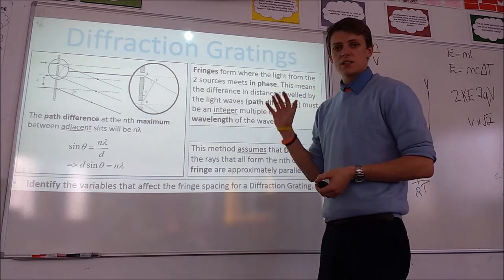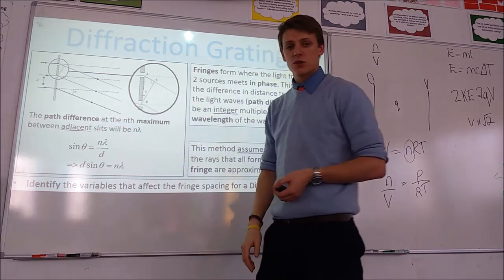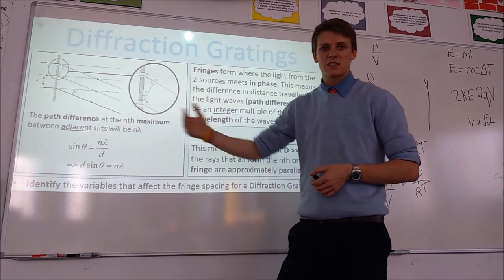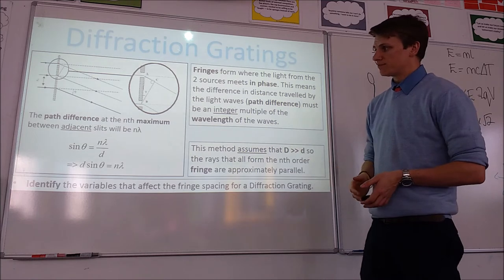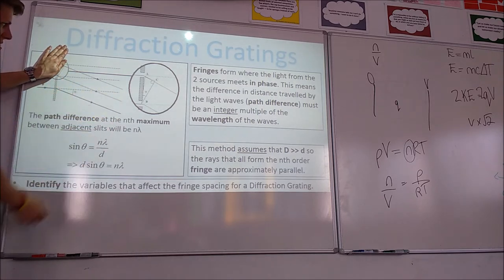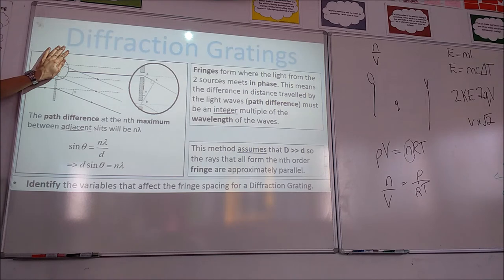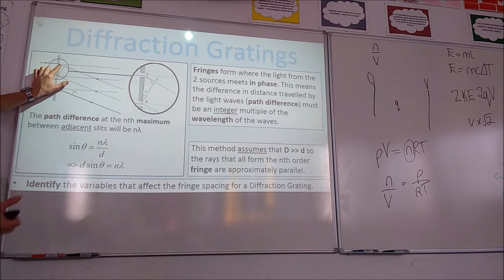We're going to make an assumption, just like last time, that all the light rays producing the same order are approximately parallel to each other. We can assume this because the distance between the slits and the screen is considerably bigger than the distance between adjacent slits. Having made that assumption, if we look at the triangle on the top left and create a right-angled triangle, from one point onwards they will travel exactly the same distance to the first-order maximum, or nth-order maximum. So the path difference from that section is zero — they travel the same distance. From one slit, we can see it travels a certain distance longer than the adjacent slit does to produce the same order maximum.